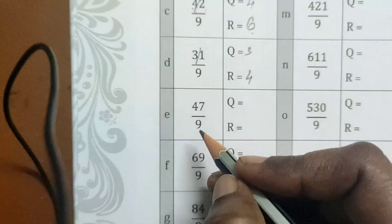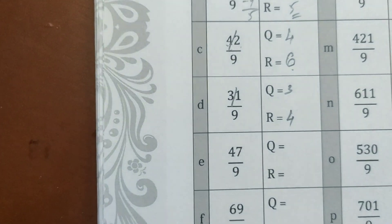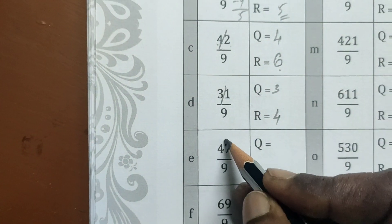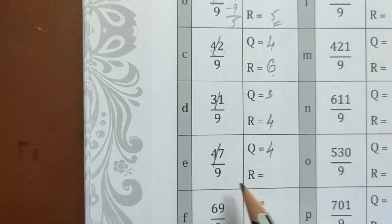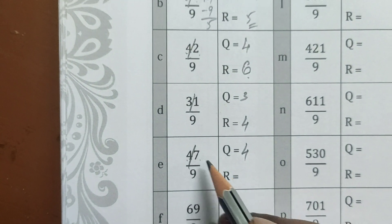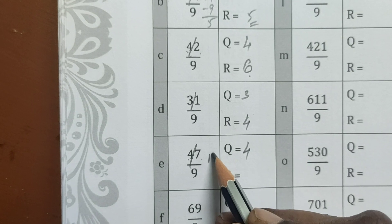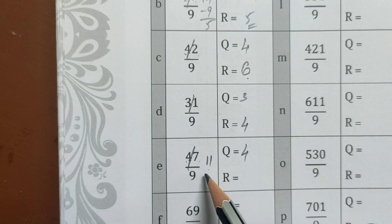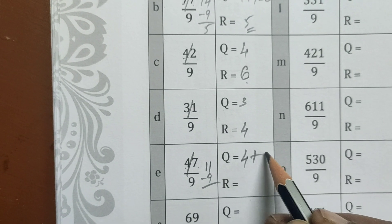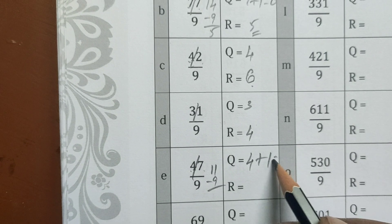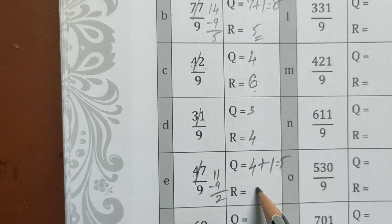Next: 47. 47 divided by 9. 4 quotient. Remainder: 4 plus 7 is 11. 11 is more than 9, so we have 1 nine. So 5 quotient, remainder 2.